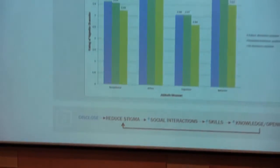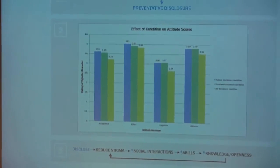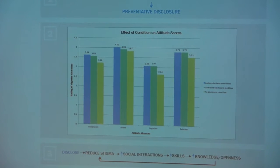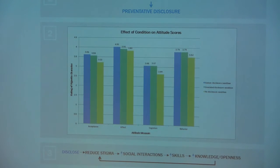In panel two, you'll see my results. As you can see, there's little difference between the blue bars and the green bars, meaning that characters who disclosed having autism and characters who disclosed having an unrelated disorder were not rated differently.